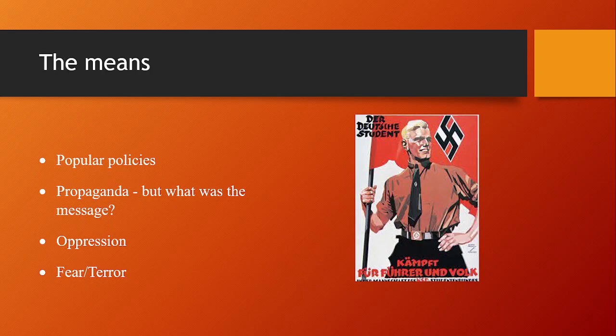The Nazis also used oppression to enforce their control. Much as they had by far the largest votes in elections to the Reichstag, the majority of Germans still hadn't voted for them. They wanted to convert the German people into true believers, and so counter-views had to be oppressed. This would be done by controlling their own message and denying a voice for alternative views. This is something in which your topics overlap, because the process began with Gleichschaltung and the Nazis' consolidation of power.